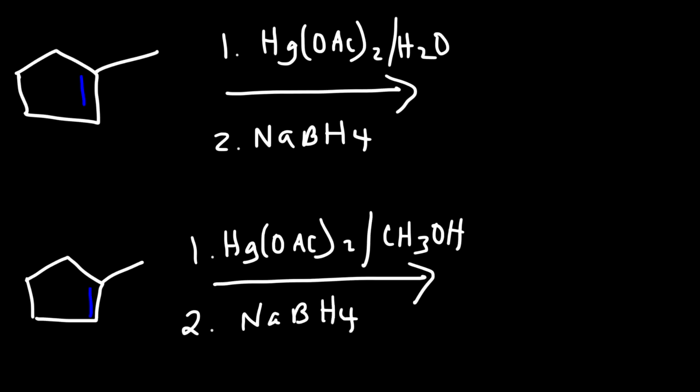So what you need to know is that for the oxymercuration-demercuration reaction, it converts an alkene into an alcohol. If you take off a hydrogen from water, you're going to get an OH. And all you need to do is put the OH on the most substituted carbon of the double bond, which is, in this case, the tertiary carbon.